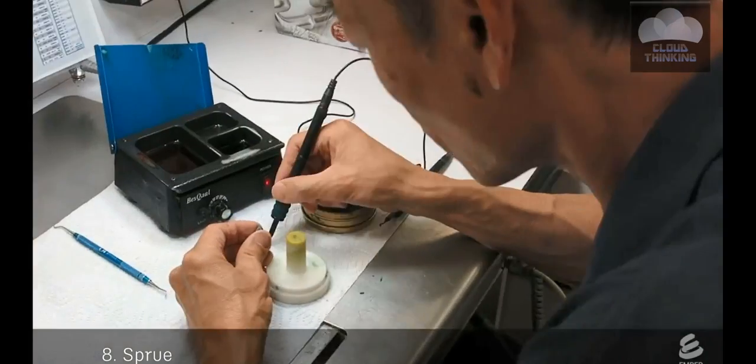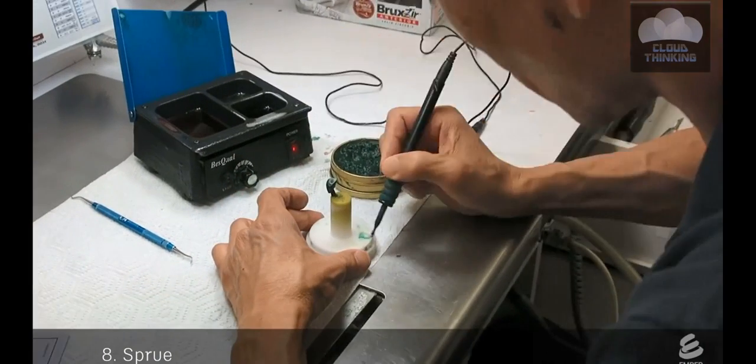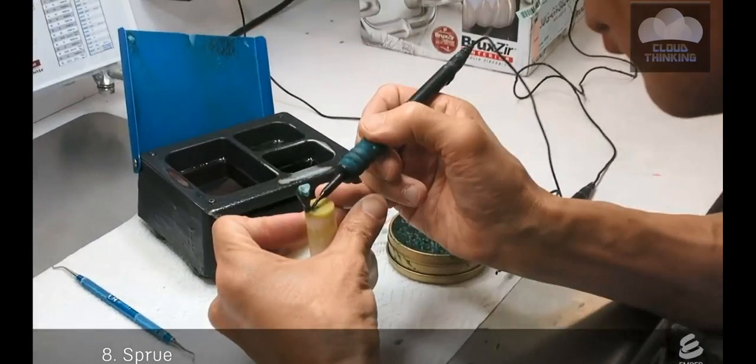Another technician sprues the crown. They use wax to attach it to a stem. This will create a passage for metal to flow into the crown during the casting process.